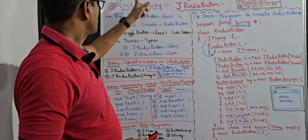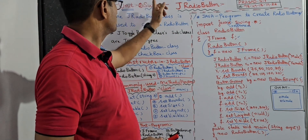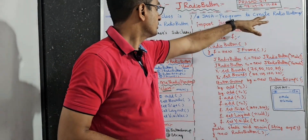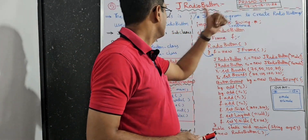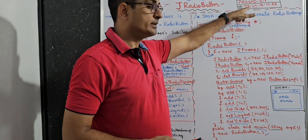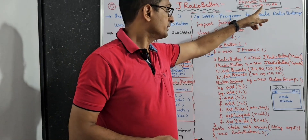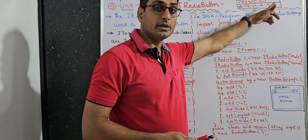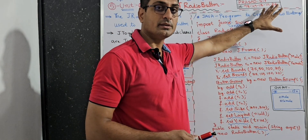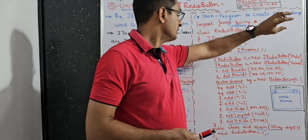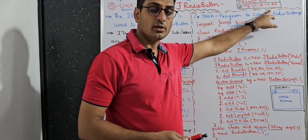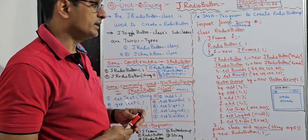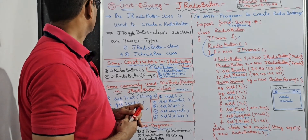Swing is a subject from object-oriented programming through Java. This is from r22 syllabus, fifth unit. This is my mobile number: 9849181923. If you have any doubts or queries, if you want any study material, programs, or manual, WhatsApp me and I will send you.